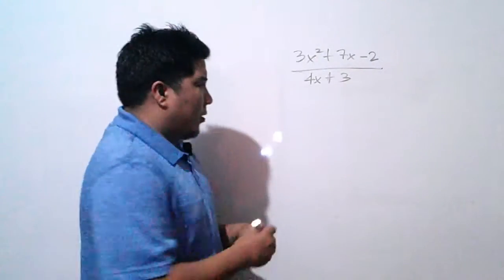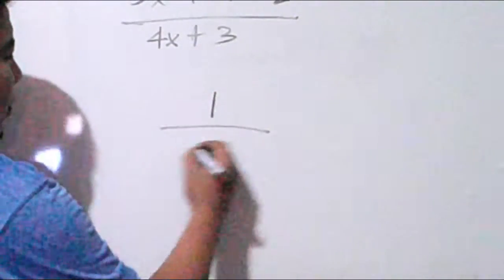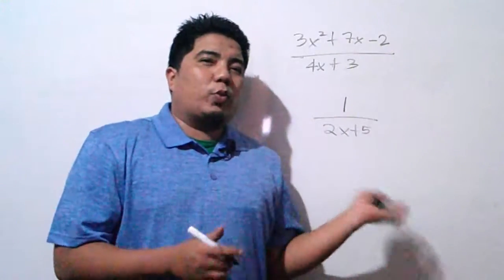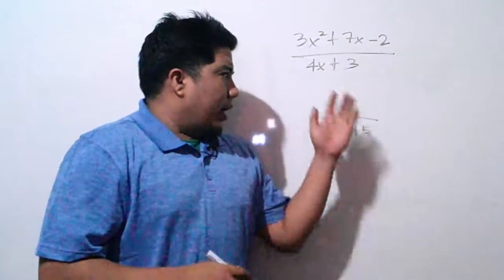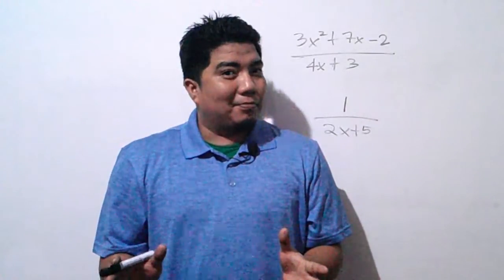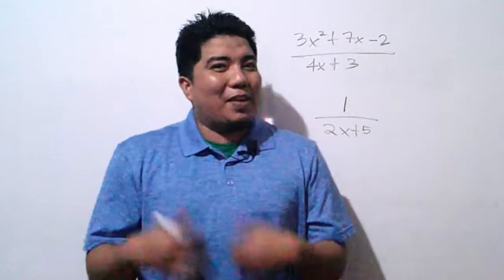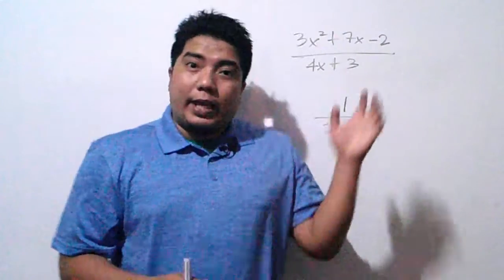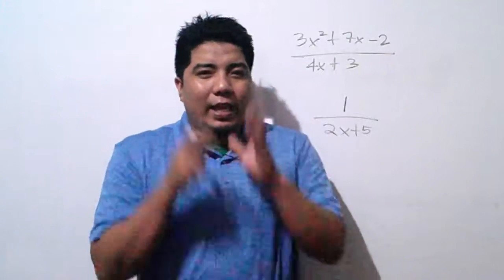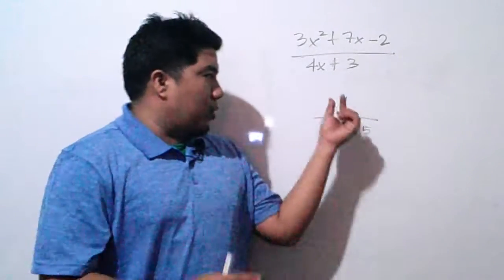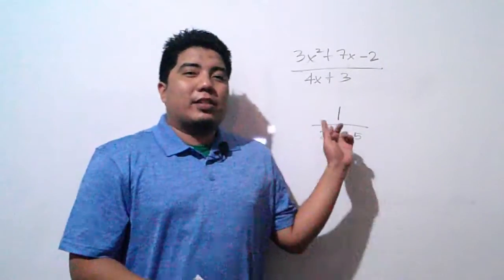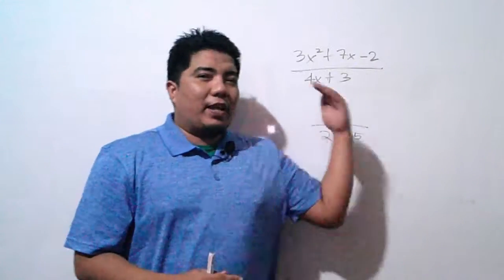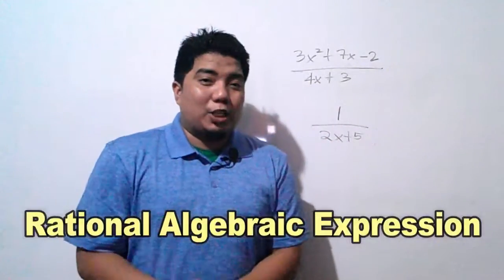Let's consider another example: 1 over 2x plus 5. Is 1 a polynomial? Yes — 1 is a polynomial because it is one term. Is 2x plus 5 a polynomial? Yes, it is a binomial. Therefore, this whole expression is a rational algebraic expression.